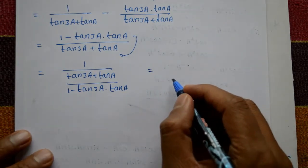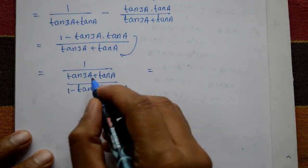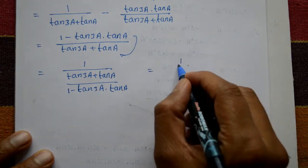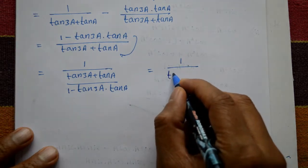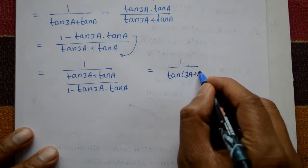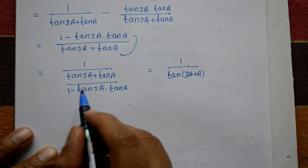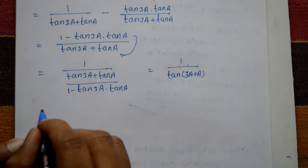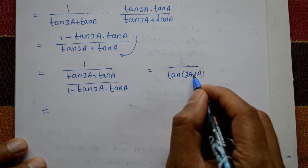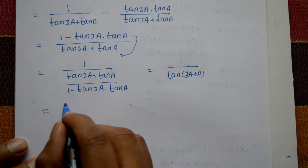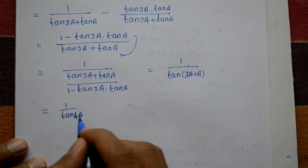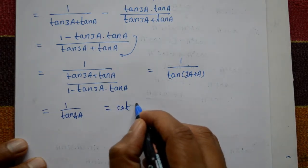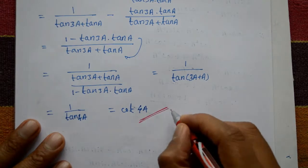This equals 1 upon (tan(3a) plus tan(a)) divided by (1 minus tan(3a) times tan(a)). Now, by the tan addition formula — tan(A+B) = (tan(A) plus tan(B)) divided by (1 minus tan(A) times tan(B)) — this expression is 1 upon tan(3a + a), which equals 1 upon tan(4a). And 1 by tan means cot, so this equals cot(4a), which is the required right hand side.